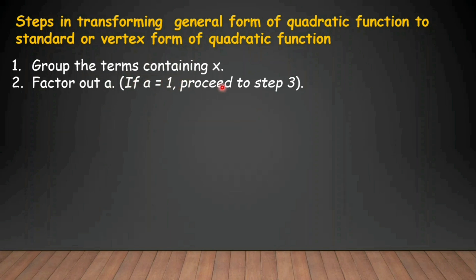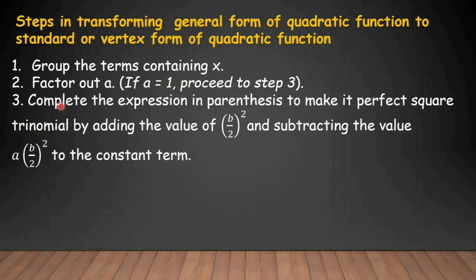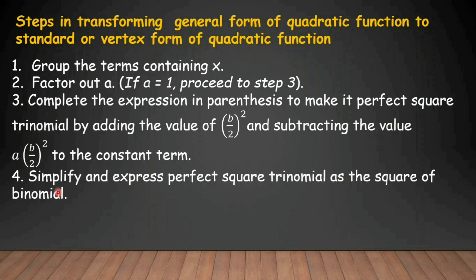If a is equal to 1, proceed directly to step 3. So remember that — when the value of a in the equation is 1, we skip step 2 and proceed to step 3. Step 3: complete the expression in parentheses to make it a perfect square trinomial by adding the value of b over 2 squared, and subtracting the value of a times quantity b over 2 squared from the constant term. And fourth, simplify and express the perfect square trinomial as the square of a binomial.